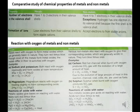Reaction with oxygen — metals react with oxygen to form metal oxides, which are generally basic in nature. Basic oxides turn red litmus paper blue.